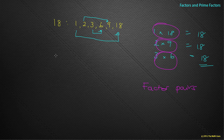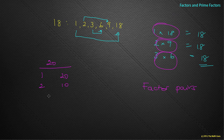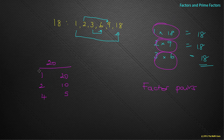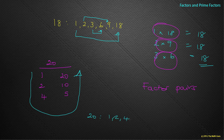Rather than writing factors in a list, let's look at factor pairs for twenty. One must go with twenty because one times twenty is twenty. Two must go with ten because two times ten is twenty. Three doesn't work. Four goes with five because four times five is twenty. I don't need to go any further. The factors of twenty are one, two, four, five, ten and twenty — we think of this as a horseshoe shape.